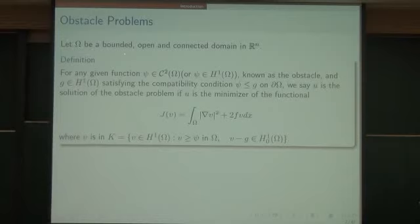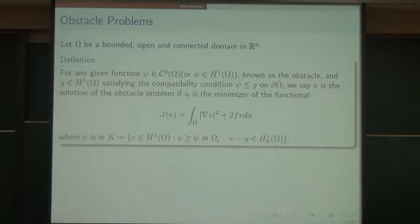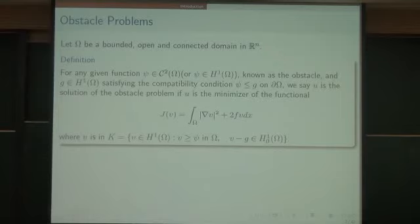I will choose omega, a bounded open and connected domain in R^n. For a given function psi, I will assume it is in C^2 — though we can extend our result when psi is in H^1 — and we usually call it the obstacle. For a given boundary condition G satisfying the compatibility condition on the boundary, we say u is the solution of the obstacle problem if u is the minimizer of this energy functional.